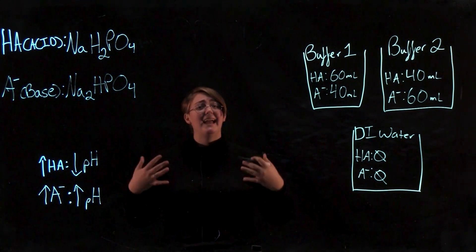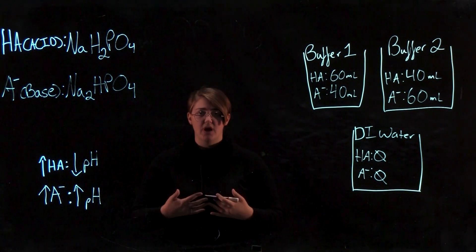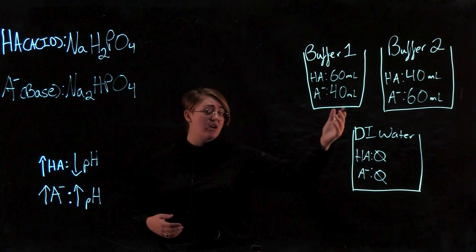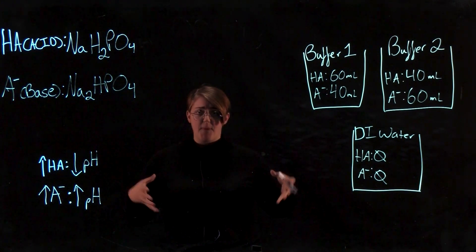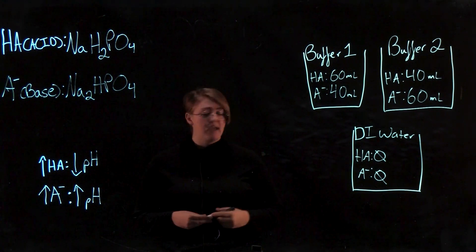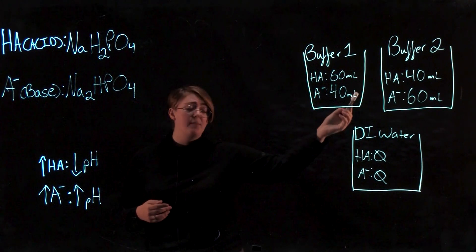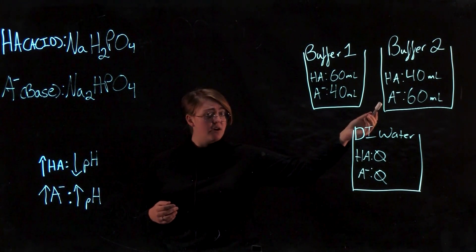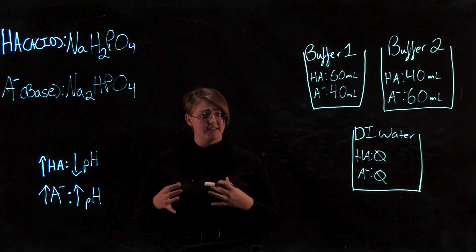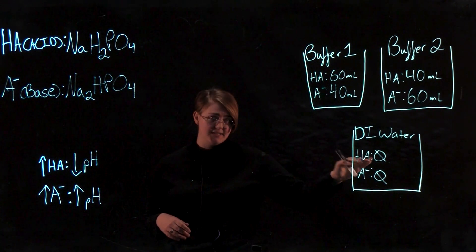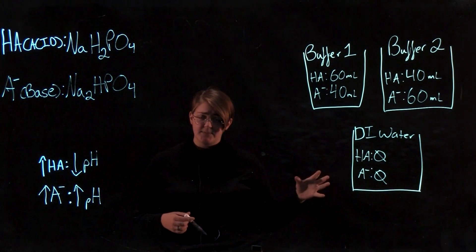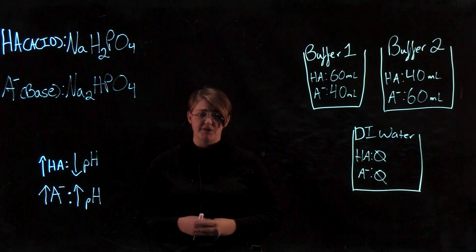To think about this conceptually, when you're adding acid to solution, you're putting more protons into solution. One of these solutions should have been better at neutralizing those positive charges, those protons that we put into solution. To look at that, we need to think about how much of our base was in our buffers and how much of our acid was in our buffers to be able to neutralize that. Our DI water had no acid and no base to neutralize that. Think about that conceptually and look back at your data to answer question 2.